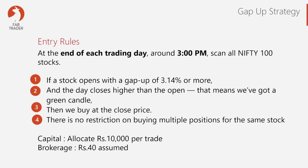Let's talk about the entry rules and capital allocation. Every day at 3 PM, we scan 50–100 stocks. Rule number one: out of those stocks, if a stock opened that day with a gap-up of a minimum of 3.14% or more, we select those stocks. Rule number two: as the market is coming to a close, the stock's price must still be higher than its open — meaning there is a green candle for that day. If both conditions are met, we go ahead and buy that stock at around 3 PM.